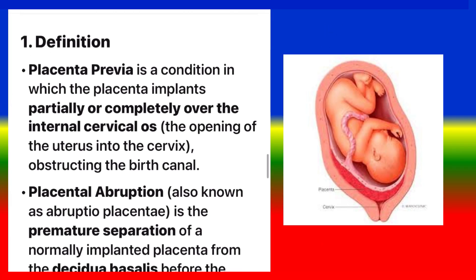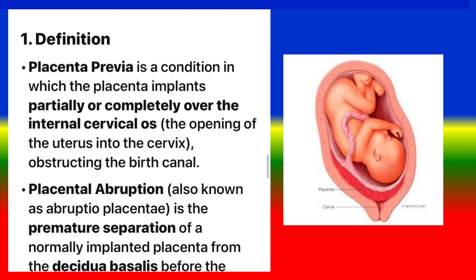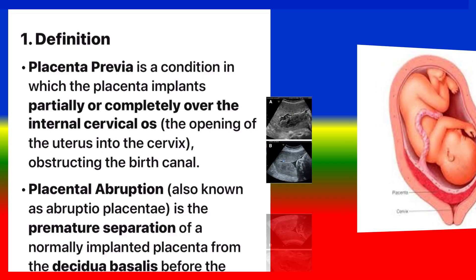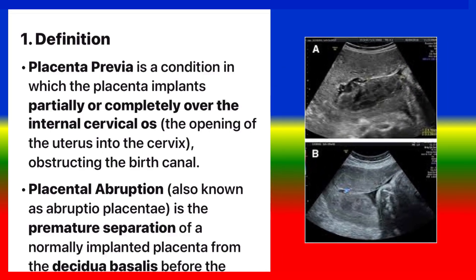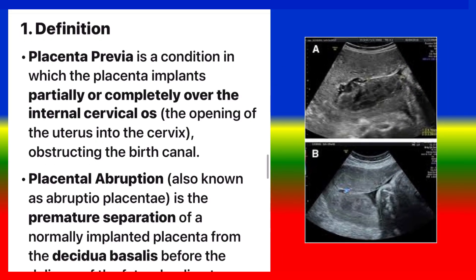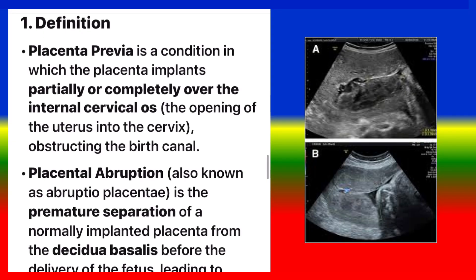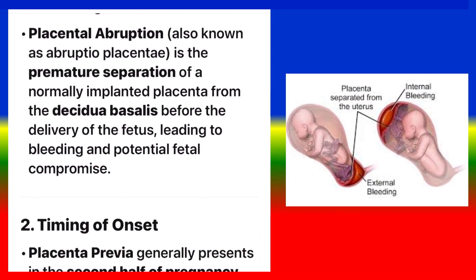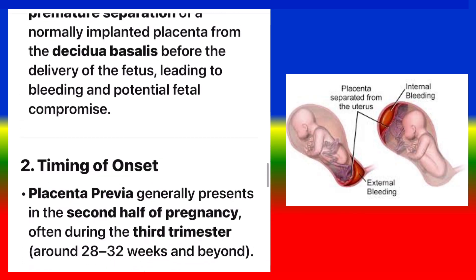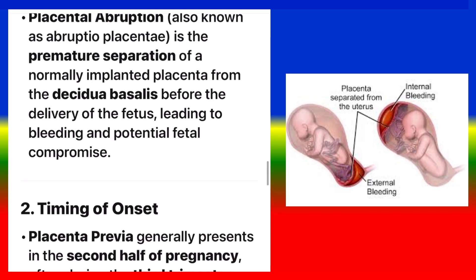Definition. Placenta previa is a condition in which the placenta implants partially or completely over the internal cervical os, the opening of the uterus into the cervix, obstructing the birth canal. Placental abruption, also known as abruptio placentae, is the premature separation of a normally implanted placenta from the decidua basalis before the delivery of the fetus, leading to bleeding and potential fetal compromise.